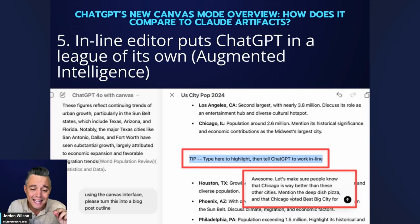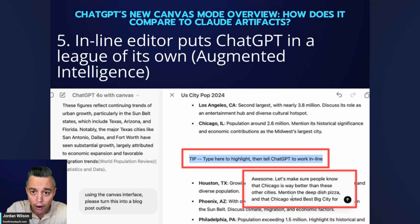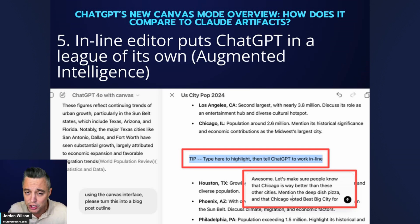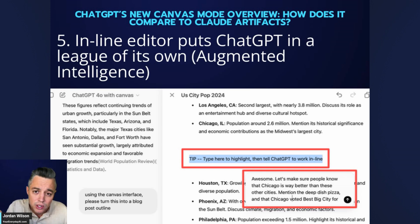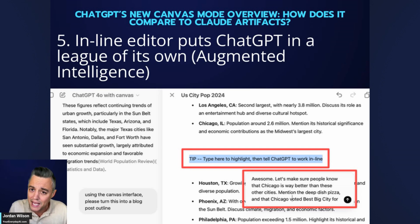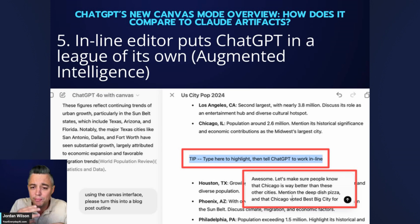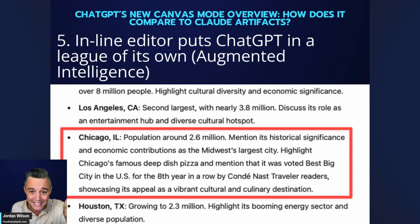Last but not least: Canvas is an inline editor, and that is huge. After you launch Canvas — and sometimes you need to explicitly tell it to use Canvas even when you're in Canvas mode — you can literally go into the canvas and start typing yourself. Maybe you write half of it and ChatGPT takes the other half, or you stop and ask ChatGPT to pick up where you left off. That is a big step toward using large language models as augmented intelligence rather than just saying 'AI, go do something' and wasting time iteratively prompting back and forth.